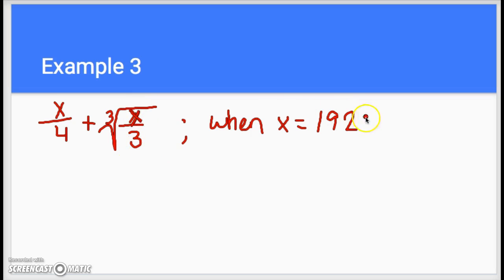So the first thing I'm going to do is I'm going to take this 192 and I'm going to put it wherever I see an x. So we have 192 over 4 plus the cube root of 192 over 3. I'm going to take care of the cube root first.